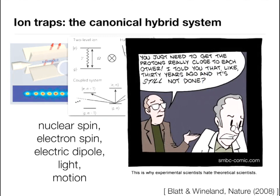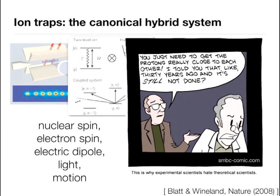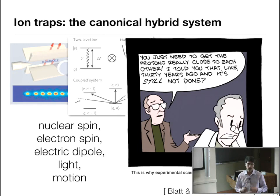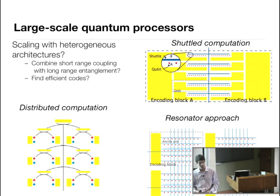Theorists like Peter Zoller come up with great ideas, and then experimentalists like Chris and Dave implement them — but we're still far from systems with lots of ions that we can manipulate and control individually. That's the challenge I want to focus on: scaling beyond linear Paul traps. The key question is how we go to more and more ions. I'll take a few stabs out in parameter space, motivated by different ways to build quantum system architectures.